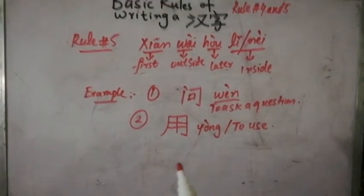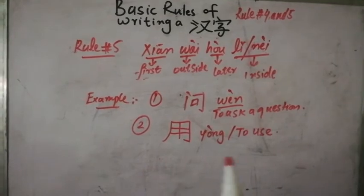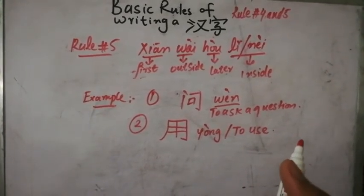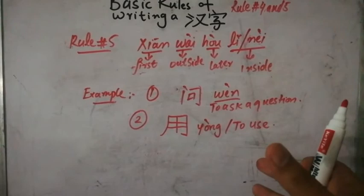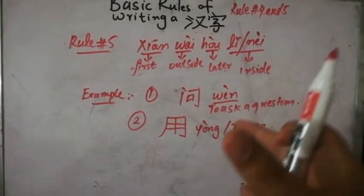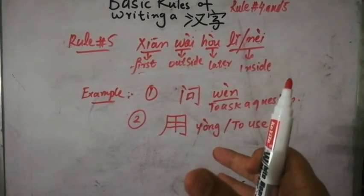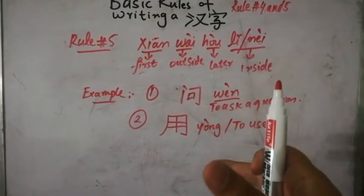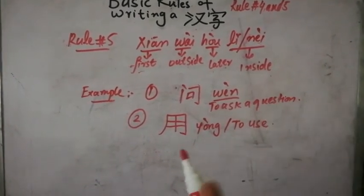And this rule tells us that you should write a Chinese character from the outer portion first and then you should write the inner portion later.